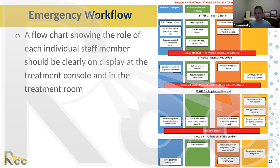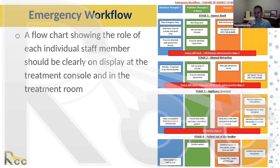Some flow charts are phenomenally well done — easy to read in an emergency. For example, if I'm the physicist and the source is stuck and I'm panicking, all I have to do is look for my color-coded role — orange for physicist — and follow the steps down the line. I would strongly consider training with something like this and posting it both at the console and in the treatment room.